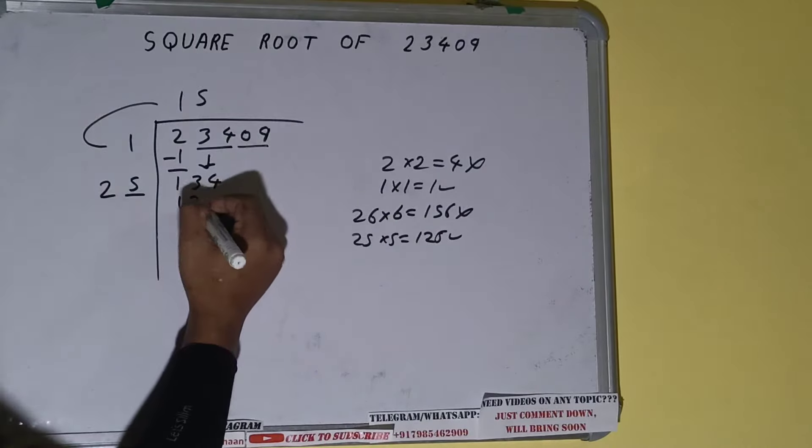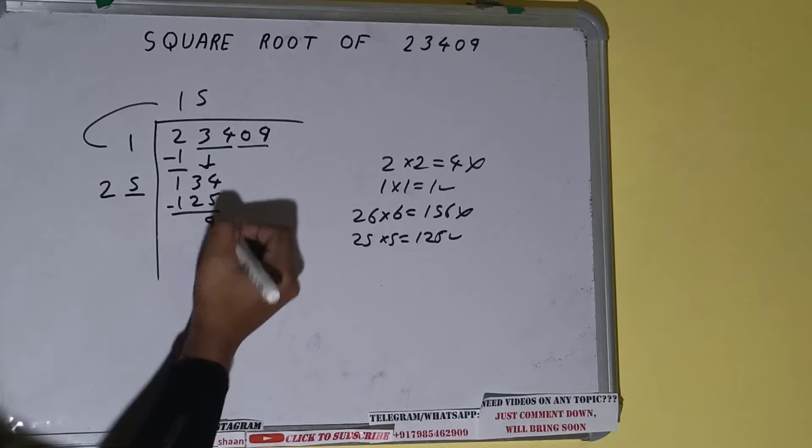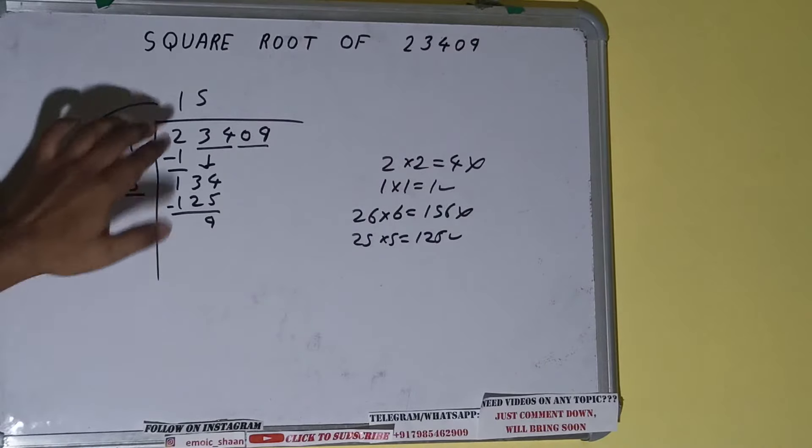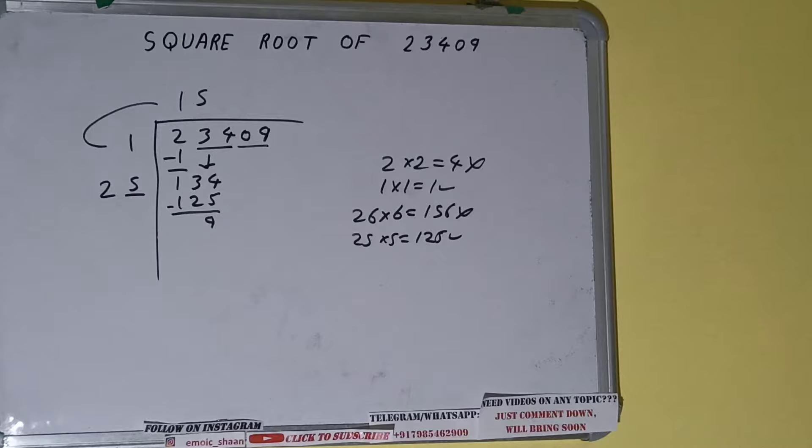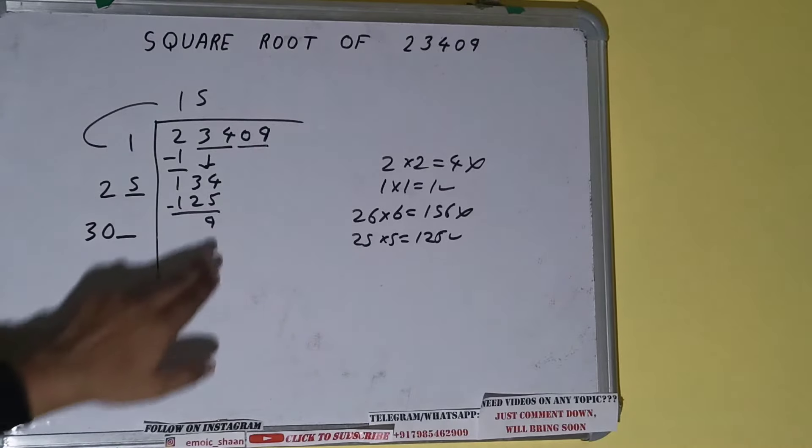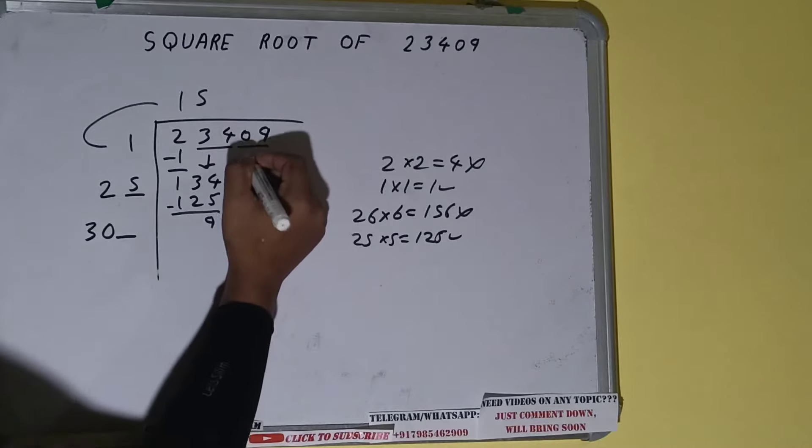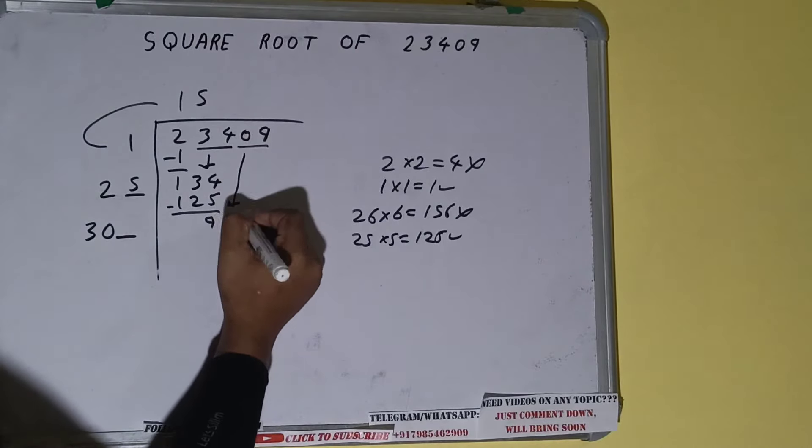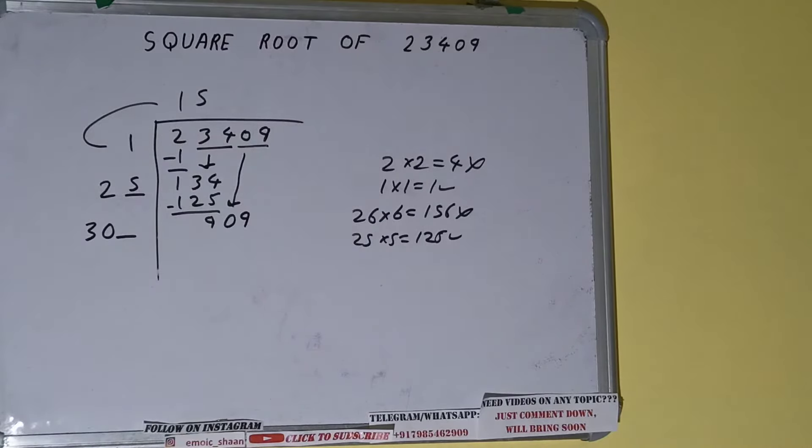So five here and five here, 125 subtract, nine will be left. Now 25 into five we did, so add both. 25 plus 5 will be 30, write it here and keep a digit extra. This number we need to make it big, so bring the next pair down and it will become 909.